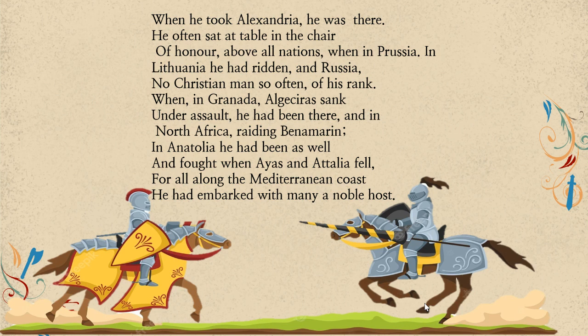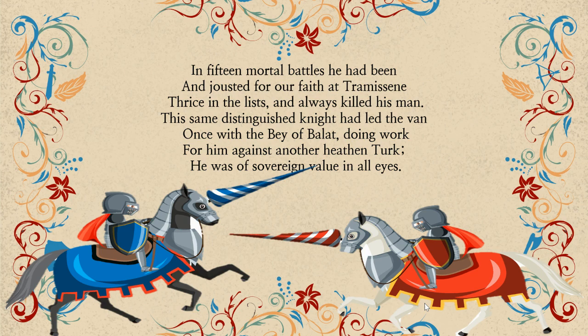"He often sat at a table in the chair of honor above all nations when in Prussia" — Prussia is a reference to modern-day Germany. "In Lithuania he had ridden, in Russia, no Christian man so often of his rank. When in Granada in Spain, Algeciras, Algeria, sank under assault, he had been there. And in North Africa, riding Benamarin; in Anatolia he had been as well. And when Ayas and Atalia fell" — ancient names of Turkish places — "for all along the Mediterranean coast he had embarked with many a noble host." So he fought in many battles. "In fifteen mortal battles he had been, and jousted for our faith at Tramissene" — for our faith meaning Christianity — and he was at a crusade battle with Muslims at the borders of the Ottoman Empire.